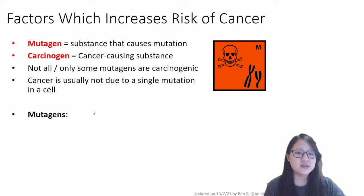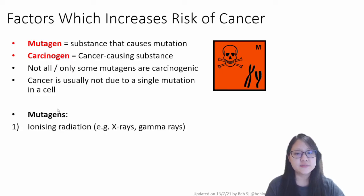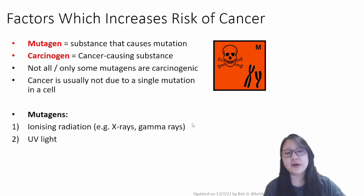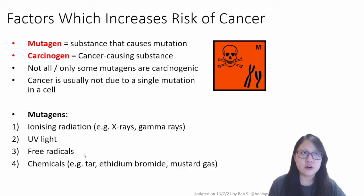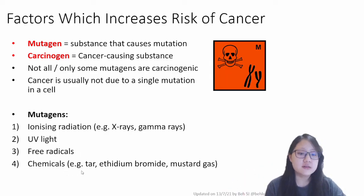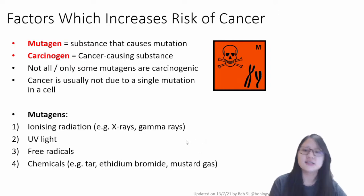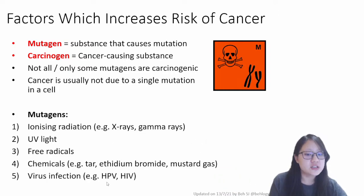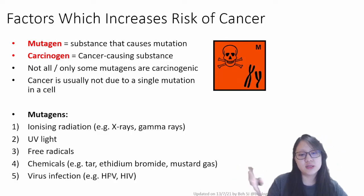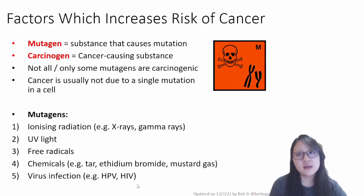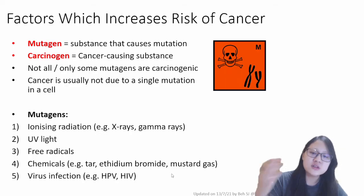Here is a list of mutagens that could be carcinogenic. Number one: ionizing radiation — for example, X-rays, gamma rays, UV light. Number two: free radicals, which are sometimes produced in your body as a side product of some reactions. Number three: chemicals such as tar, ethidium bromide, and mustard gas. Number four: virus infection. HPV, the human papillomavirus, is responsible for cervical cancer in women. HIV can also cause mutations in cells and sometimes may lead to cancer.